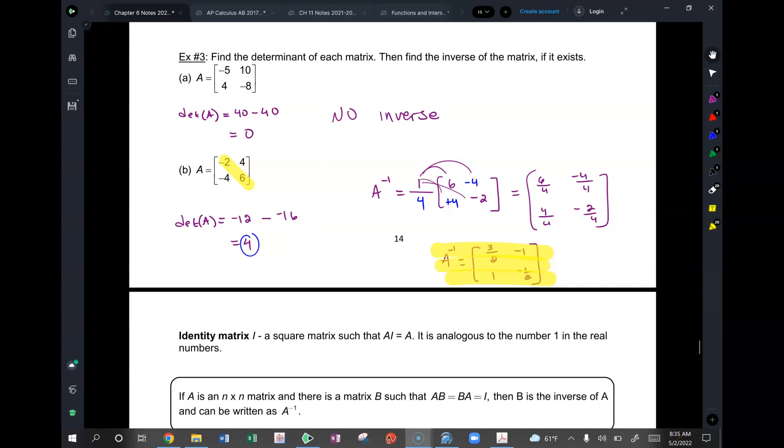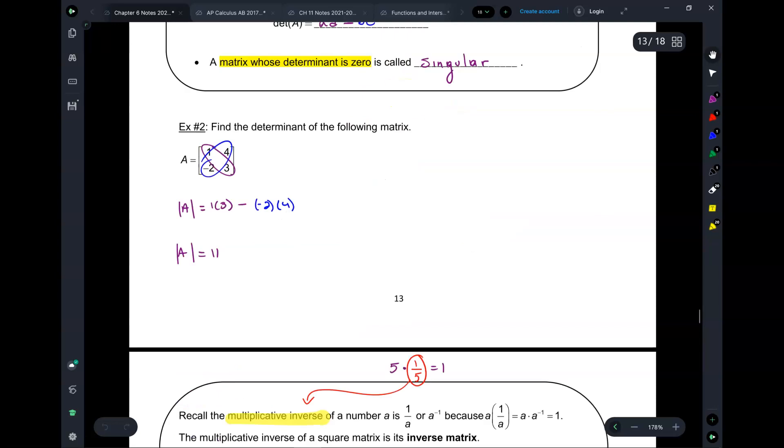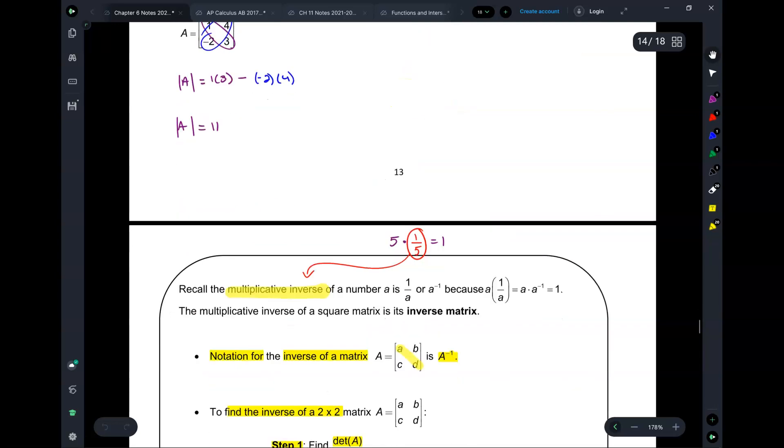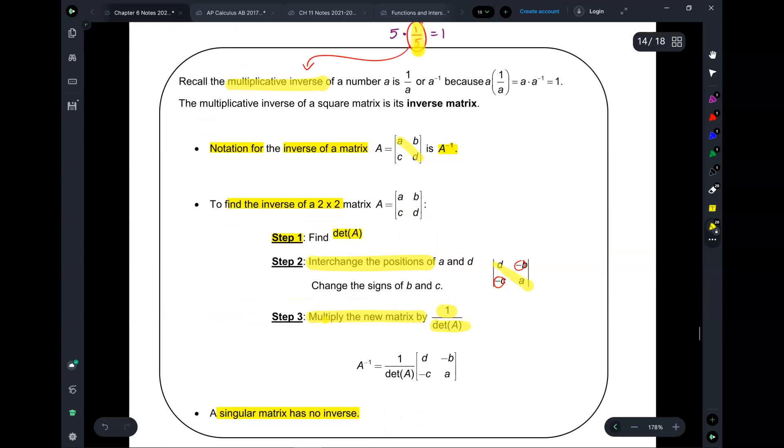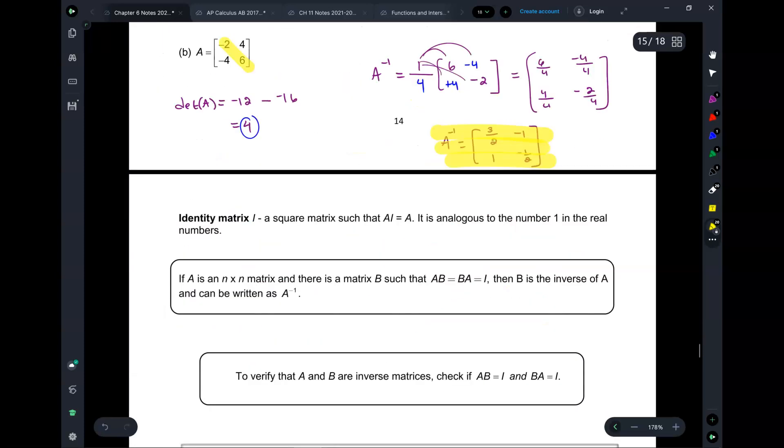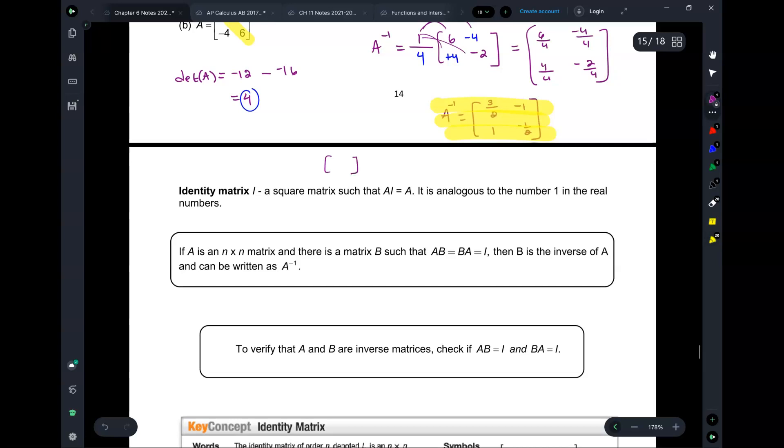Last time we started briefly talking about if you had a number 5, what would you multiply it with to get a 1? And it's 1 over 5, right? So that highlighted number that you multiply a number with to get a 1, that's called the multiplicative inverse. But what about in the case of matrices?